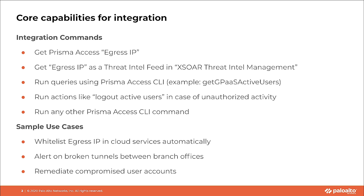The other set of commands include running queries using Prisma Access CLI. An example of such a command could be get Global Protect active users, or you could run a command to log out active users in case unauthorized activity is detected for such a user. Last but not the least, Cortex-XOR provides an ability to run any Prisma Access CLI command.